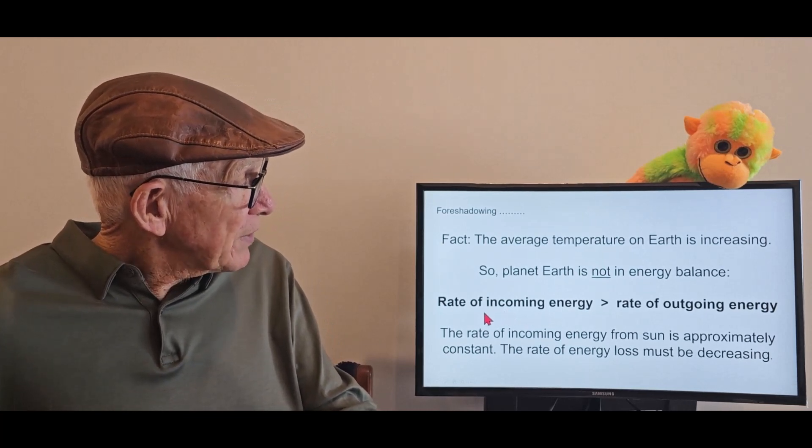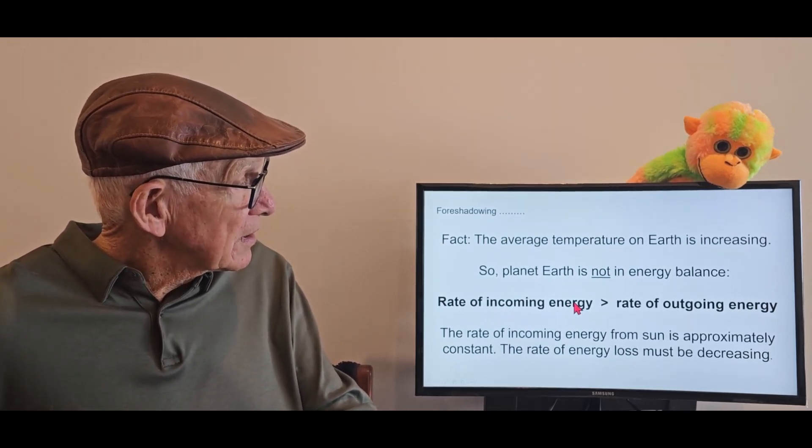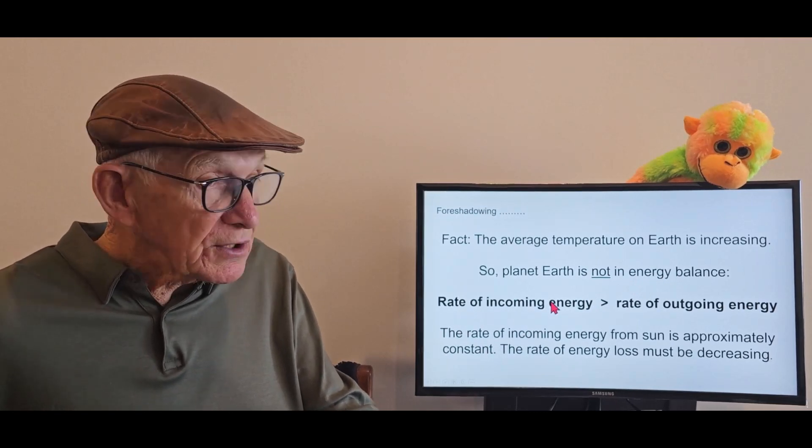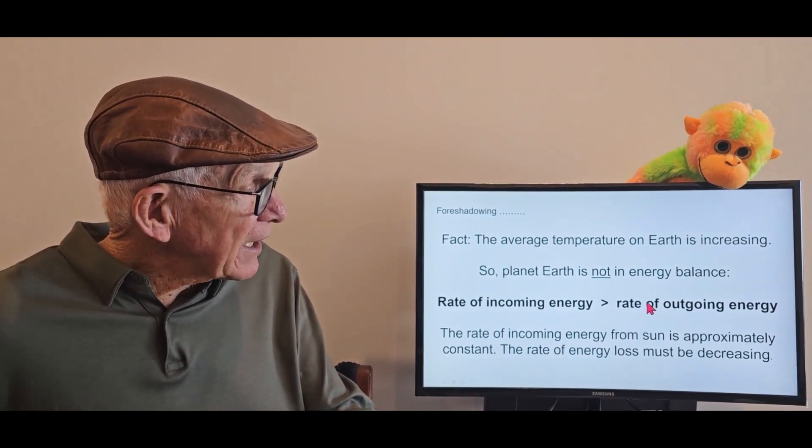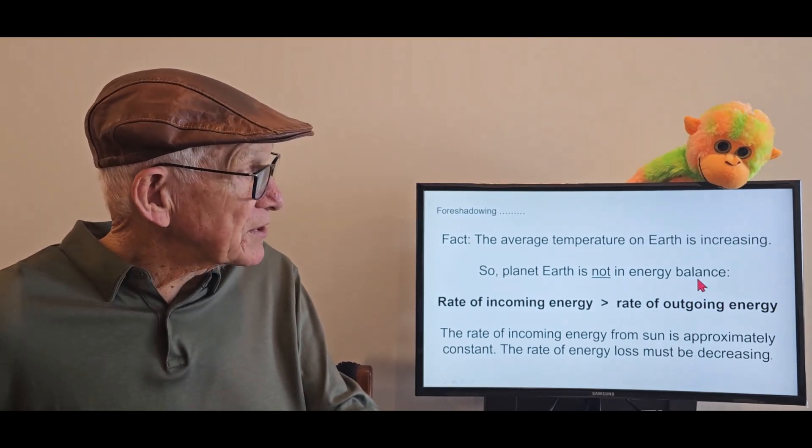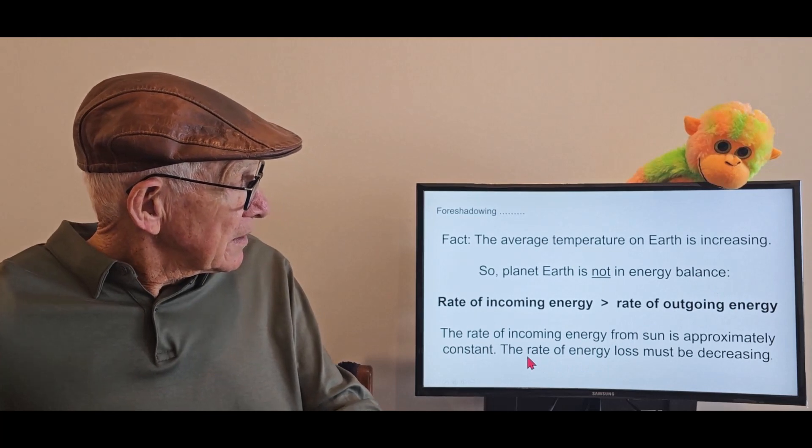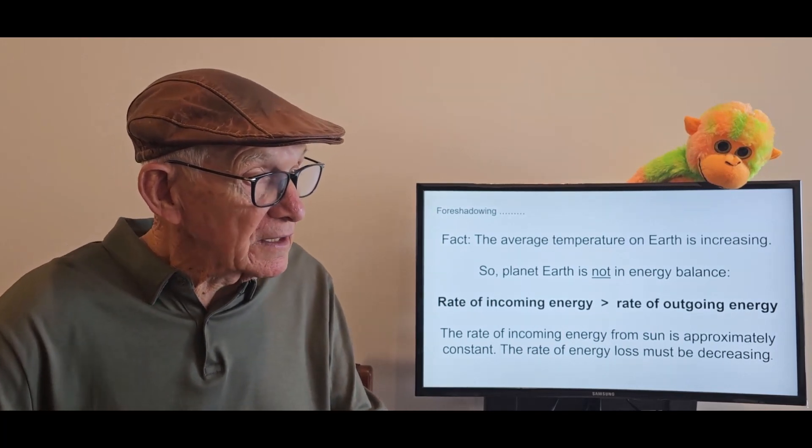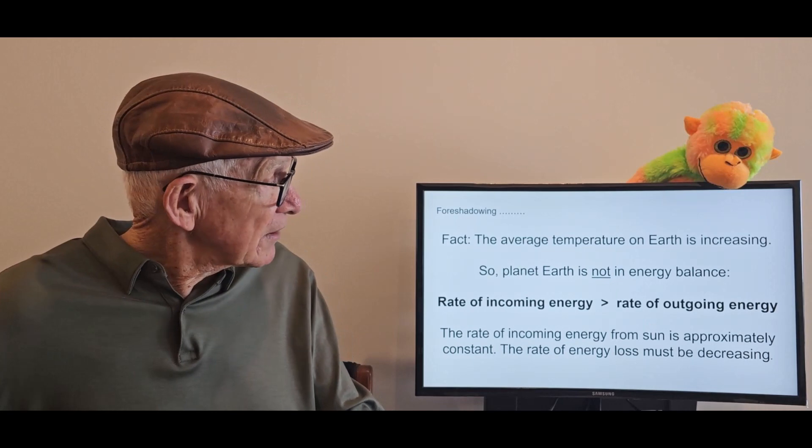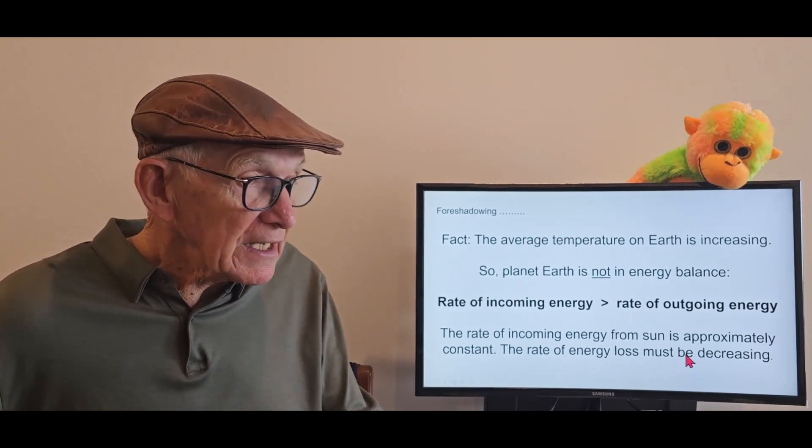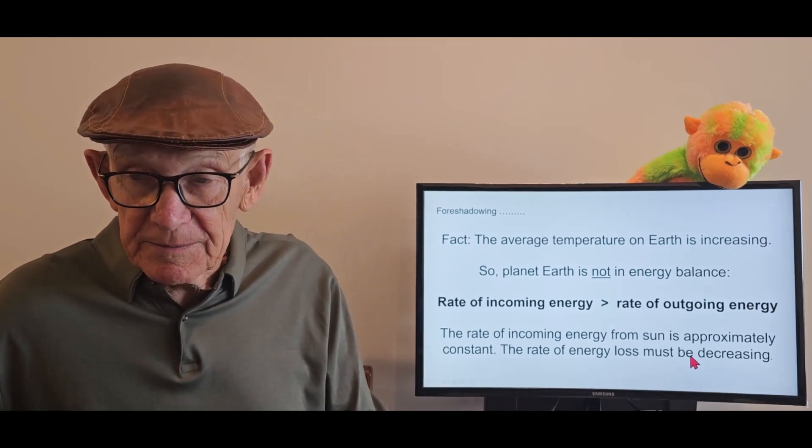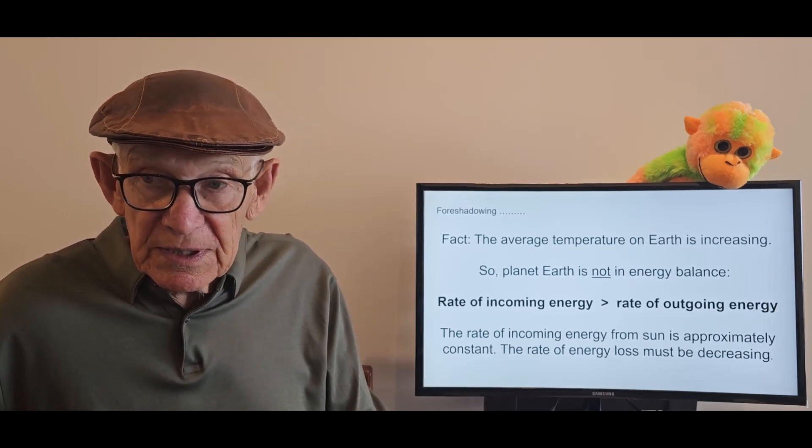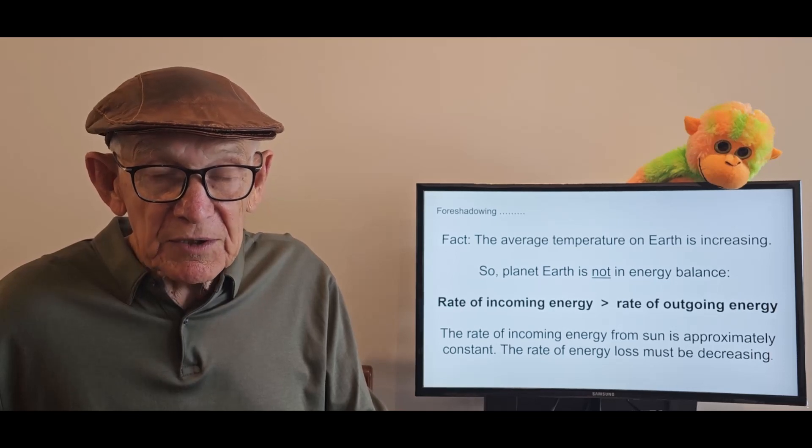Now, if the rate of incoming energy, sorry, to explain that, to explain that, we've got to, we deduce that the rate of incoming energy must be greater than the rate of outgoing energy. So, the temperature is going up. Now, the rate of incoming energy from the Sun is quite constant, apart from the occasional solar flare. It's coming down is constant. So, how can we explain this? Yes, it must be that the rate of energy loss is decreasing. The rate of emission of energy away from the Earth is decreasing. So, we think about that as we go into our next sessions.